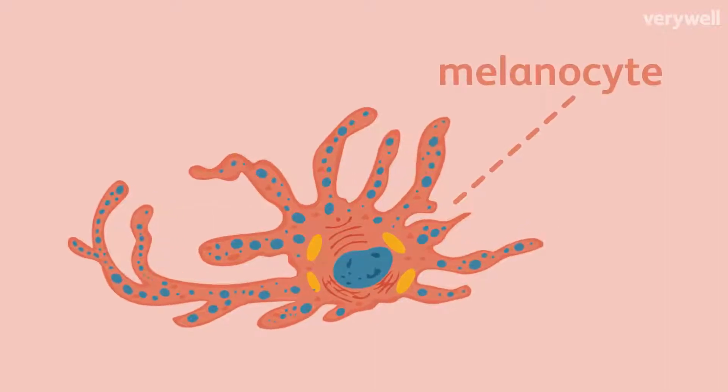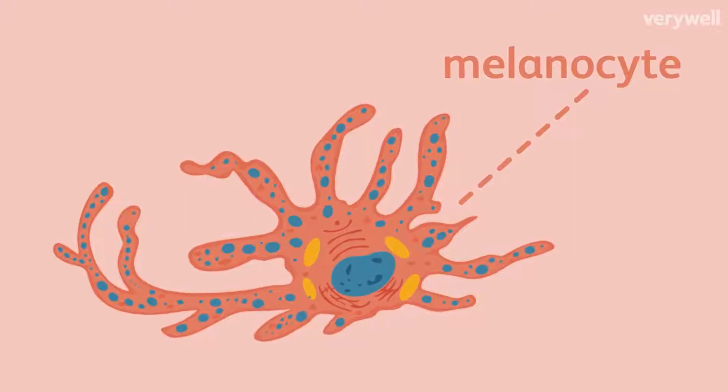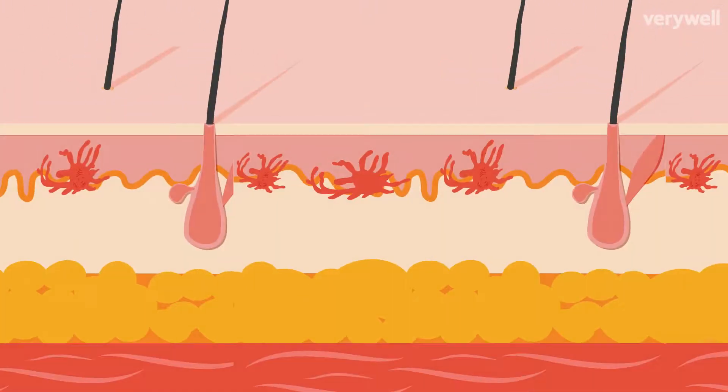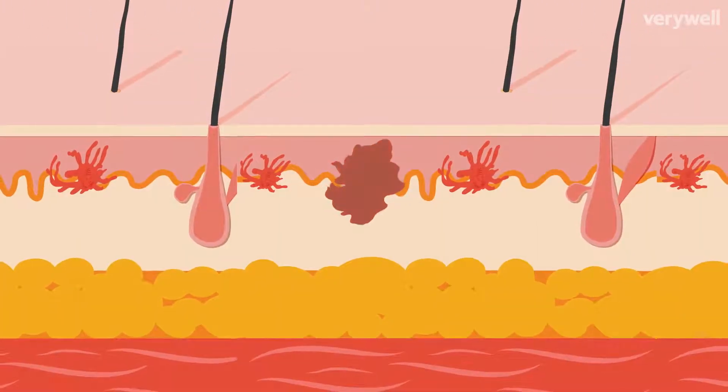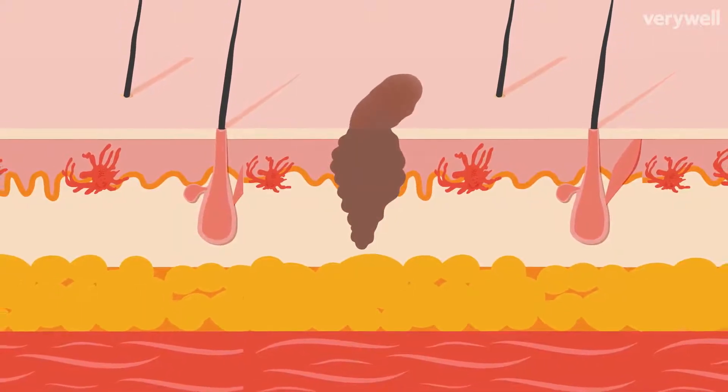These are melanocytes. They're skin cells responsible for making melanin and giving skin its color. Melanoma is a skin cancer that develops within melanocytes, turning these healthy cells into cancer cells that grow uncontrollably.